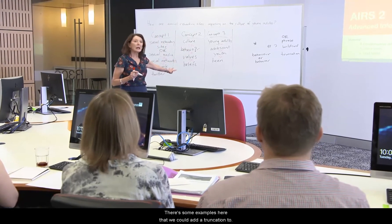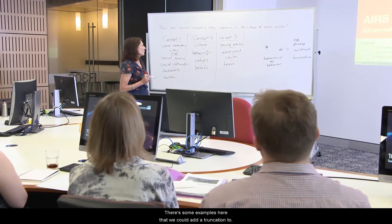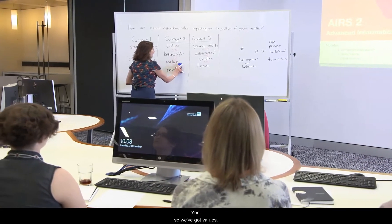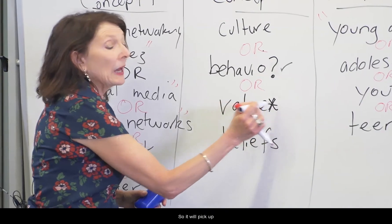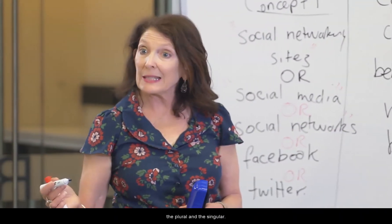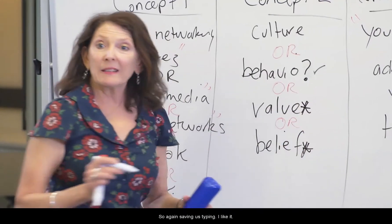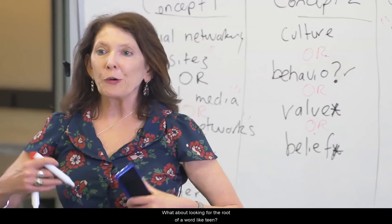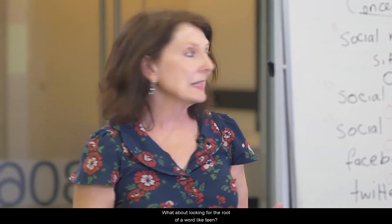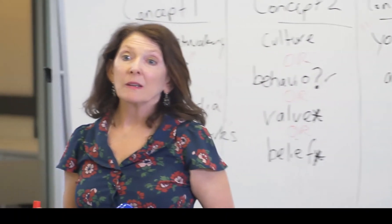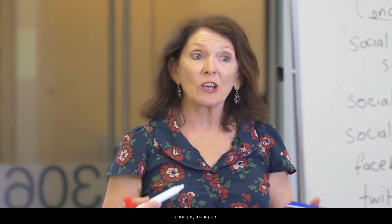Are there some examples here where we could add truncation? It's when you're looking for the plural or singular of a word — yes. So we've got 'values*', and we will pick up the plural and the singular. That's great. So again, saving us typing. What about looking for the root of a word like 'teen*'? So 'teen*' will pick up 'teen', 'teens', 'teenager', 'teenagers'.